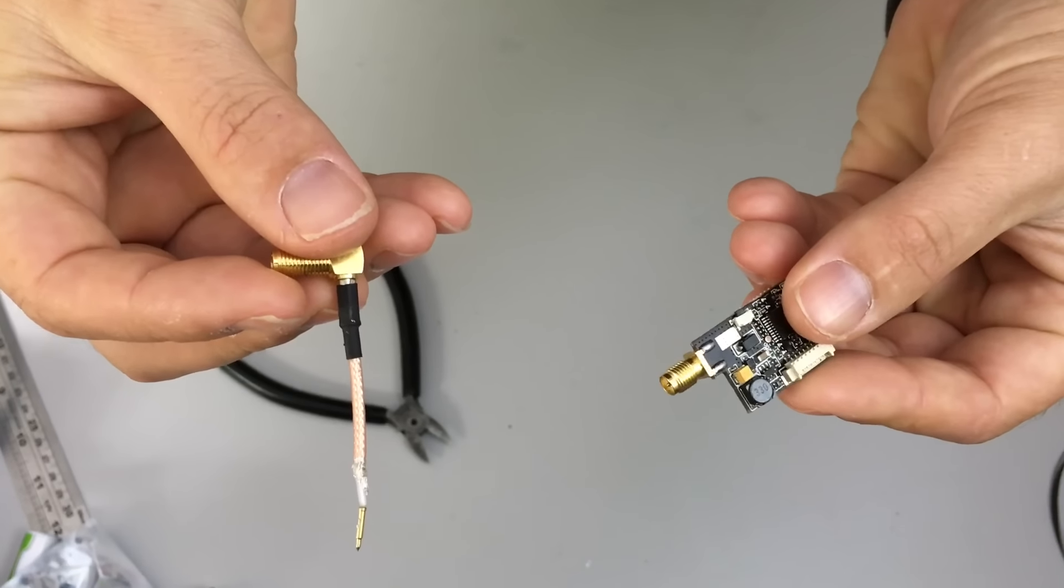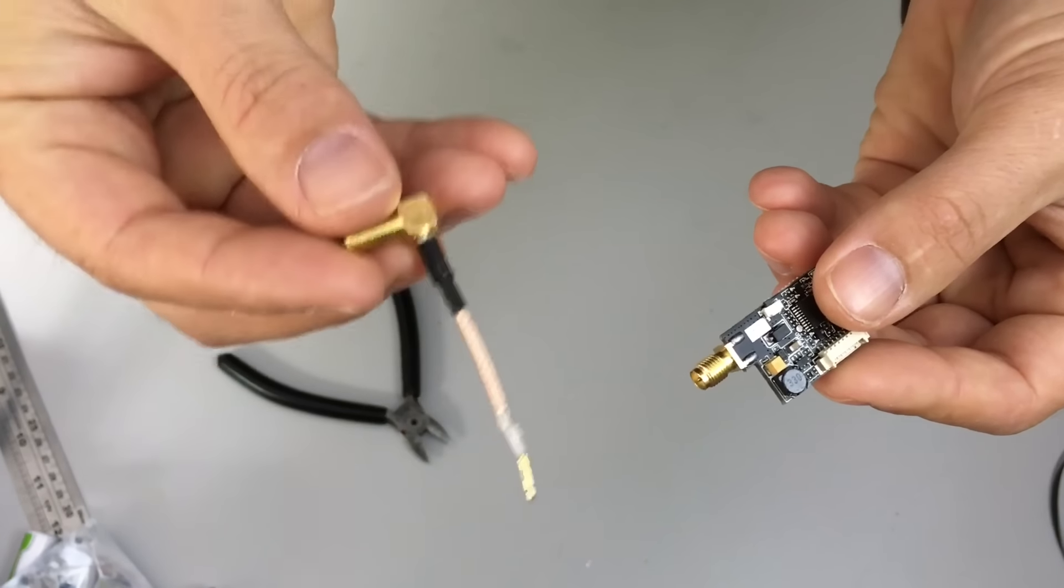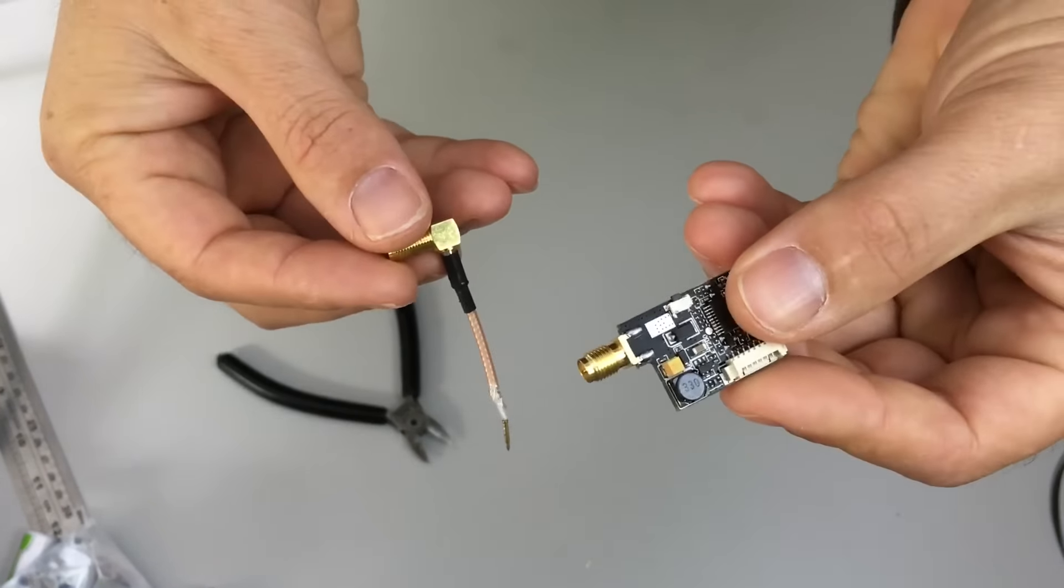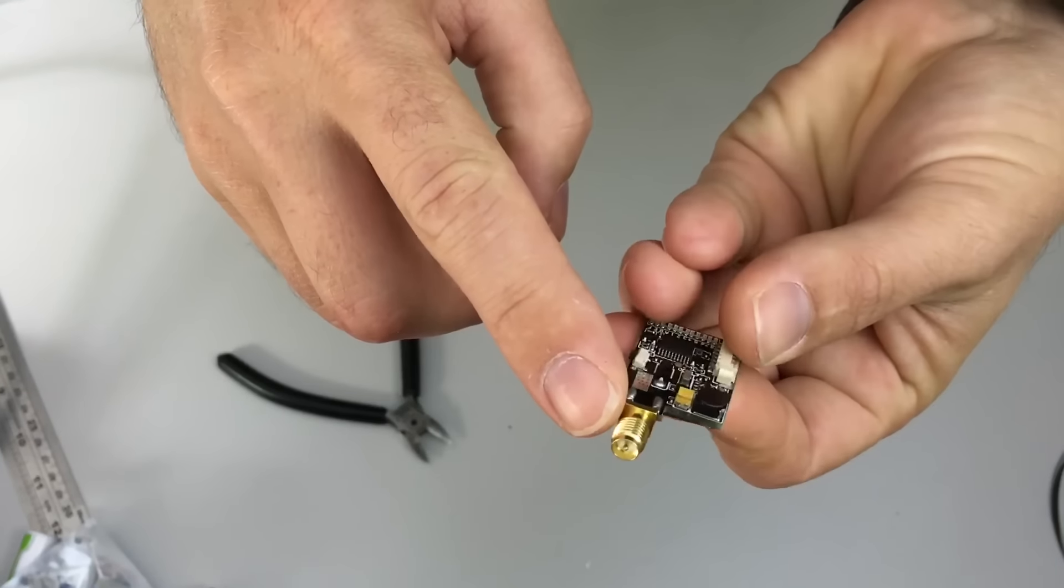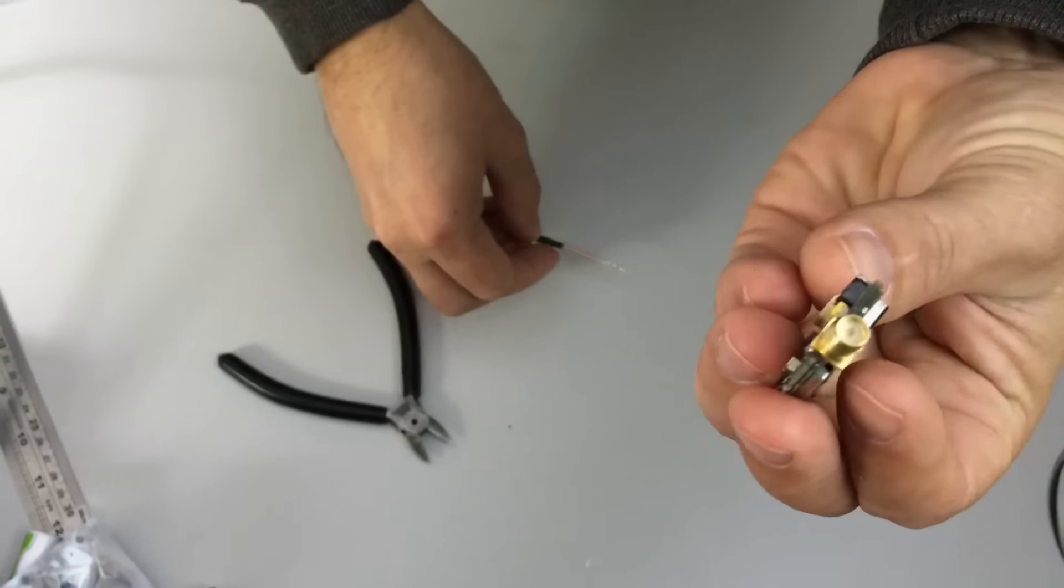Here I have an old RPSMA pigtail that's broken that I want to use to attach directly to this VTX. So I need to remove the RPSMA connector from the top of the VTX.